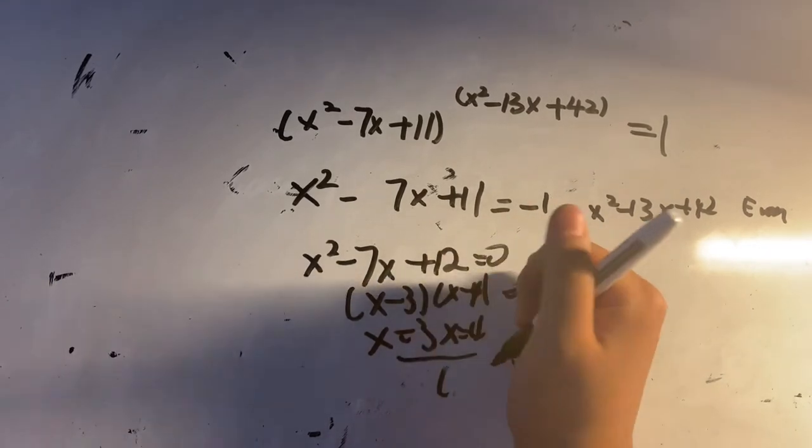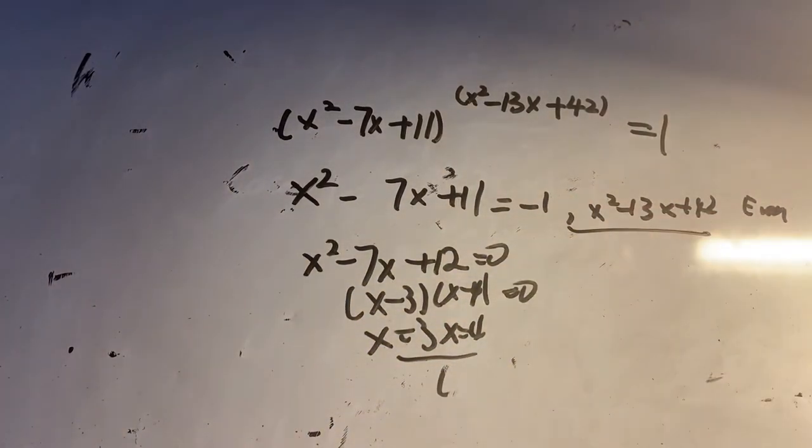Let's check both cases to verify the exponent is even. 9 minus 39 plus 42 equals 12, which is even. 16 minus 52 plus 42 also equals an even number. So for both cases, this is an even number.